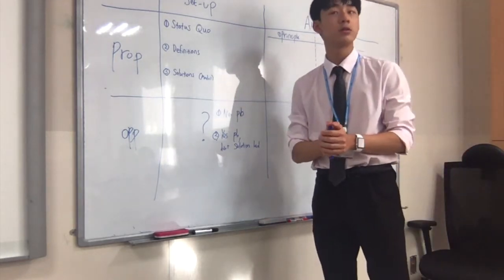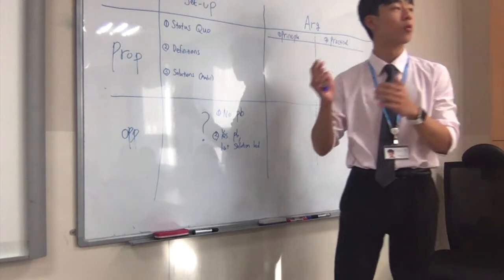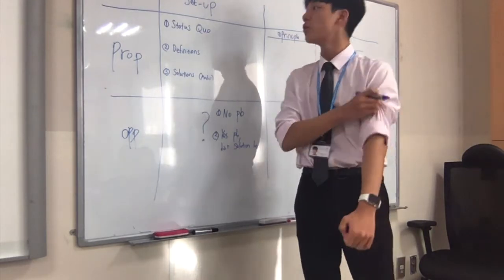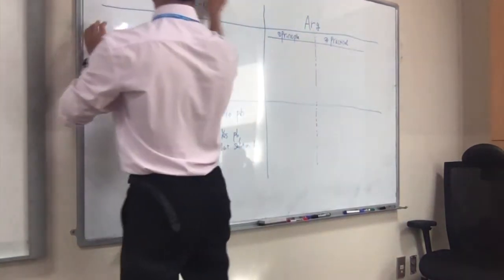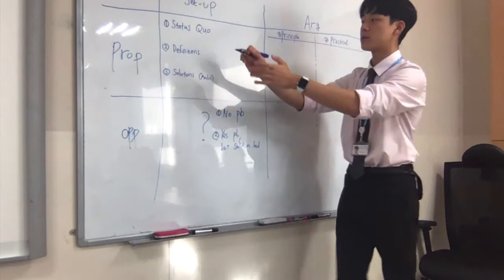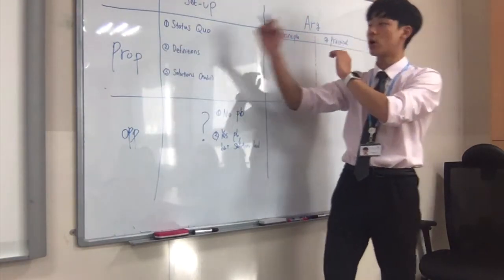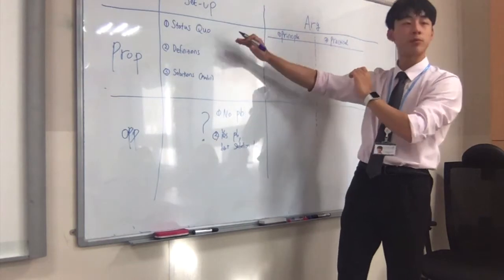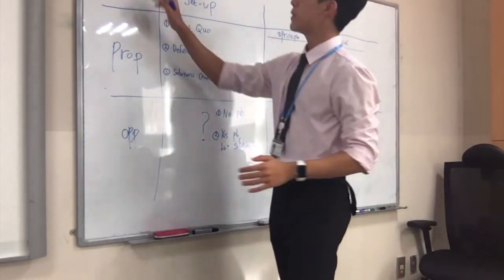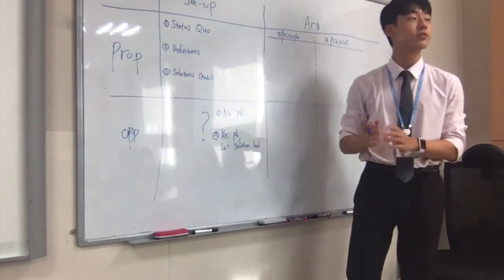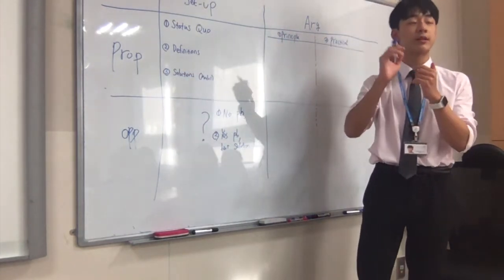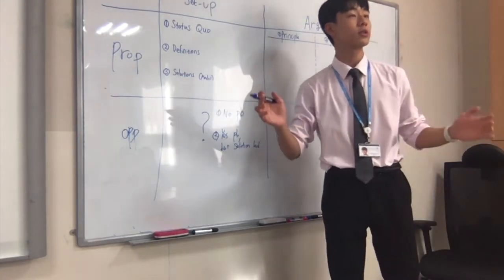Last time we talked about topics, which in a more formal world are called motions, and how to interpret those motions and use them to our advantage. Today we're covering case construction. A case is basically everything that your side is going to say. On proposition, if you identify a problem and have three arguments, that entirety is called a case — everything your side is going to present throughout the debate.